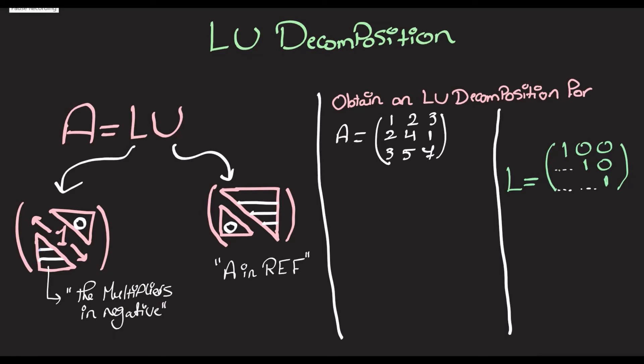So, for this example, we've got this matrix A. We're trying to find an LU decomposition. So, we start by carrying on the usual Gaussian elimination. Row 1 is going to be multiplied by negative 2, then add that to row 2. Row 1 is also going to be multiplied by negative 3, and then add that to row 3.